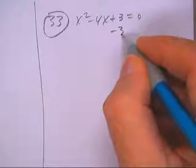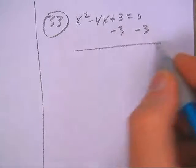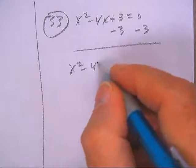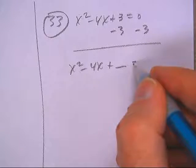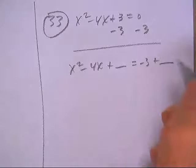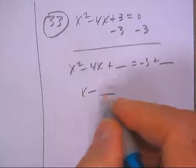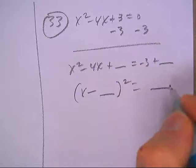Okay, on this one we'll want to subtract 3. x squared minus 4x plus a blank equals negative 3 plus a blank, and x minus a blank equals a blank.